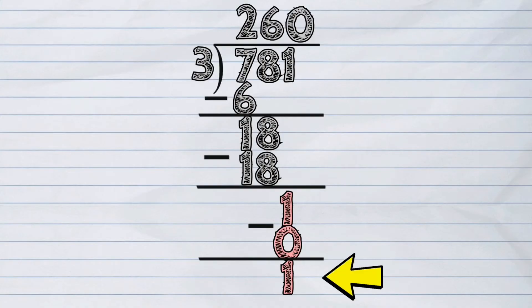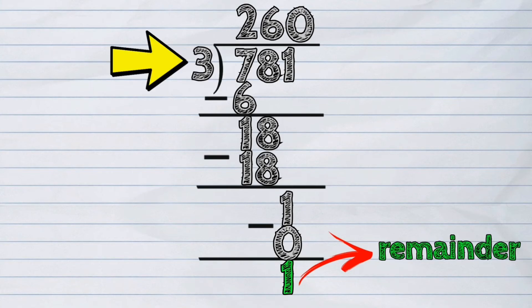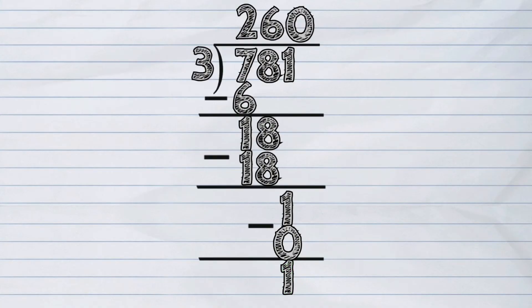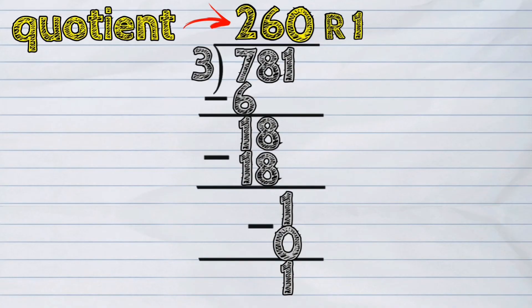As you can see, there is still 1 left over, but no more numbers to bring down. So, this will become our remainder. Take note that our remainder must be less than the divisor and is written as part of the quotient. Therefore, the quotient is 260 remainder 1.